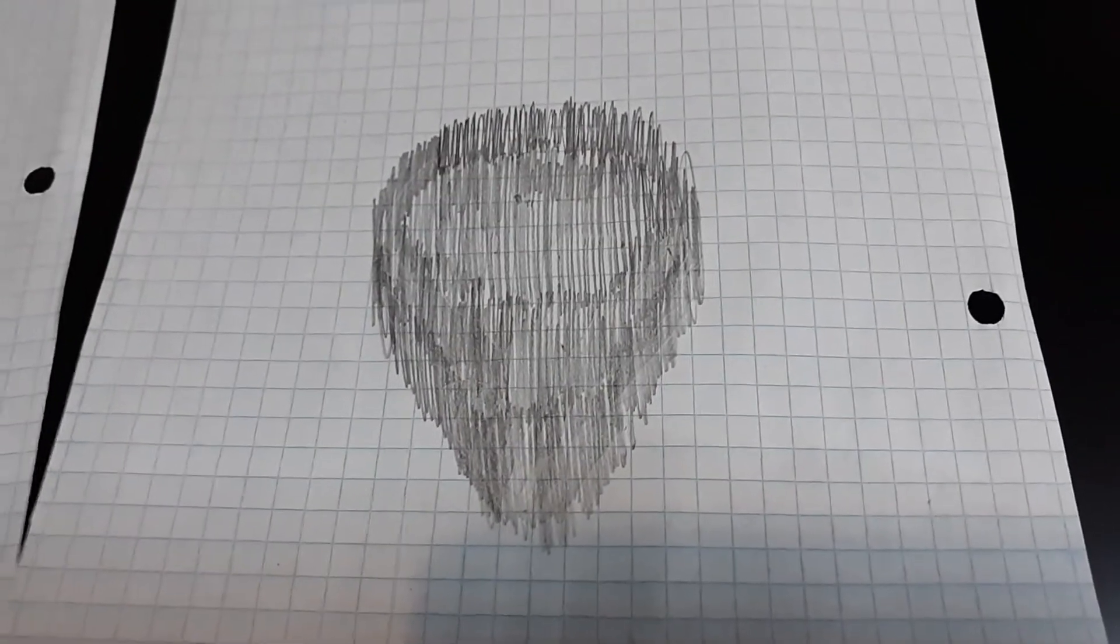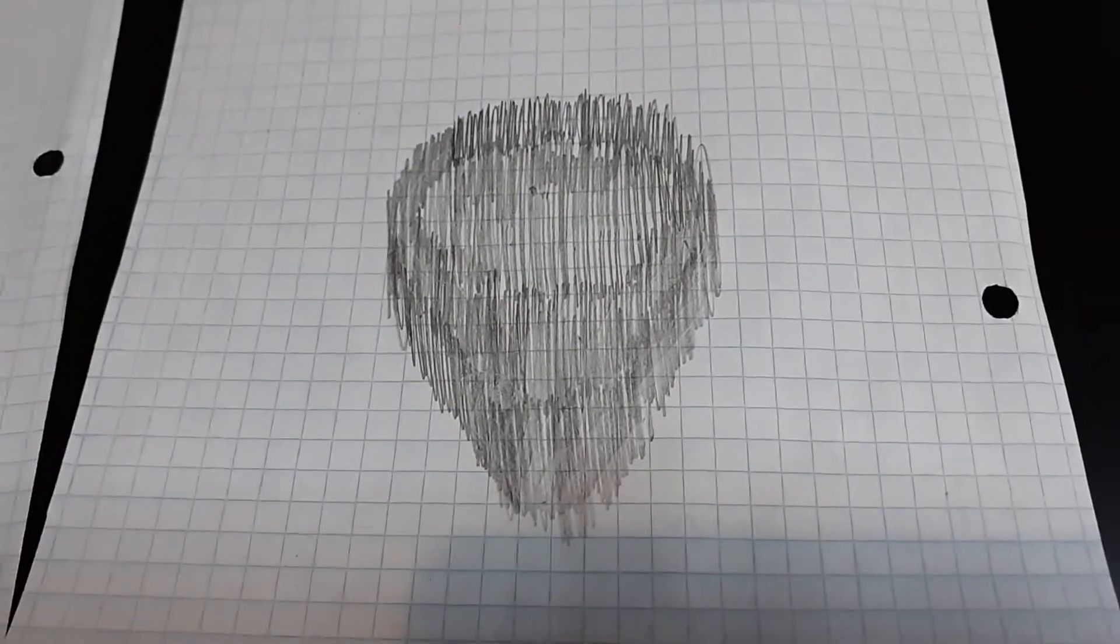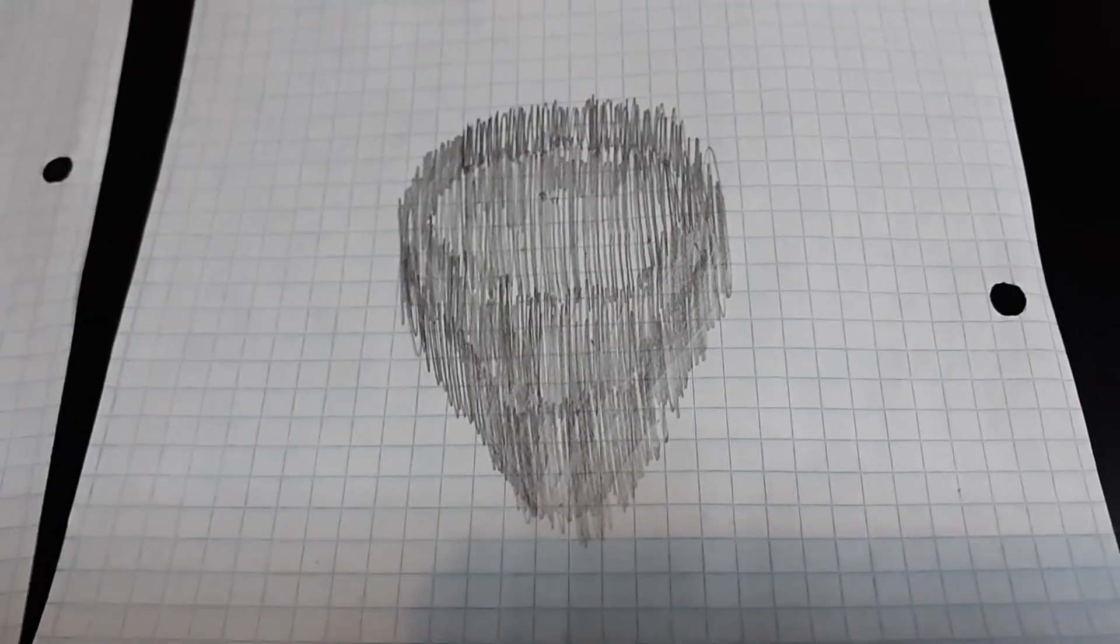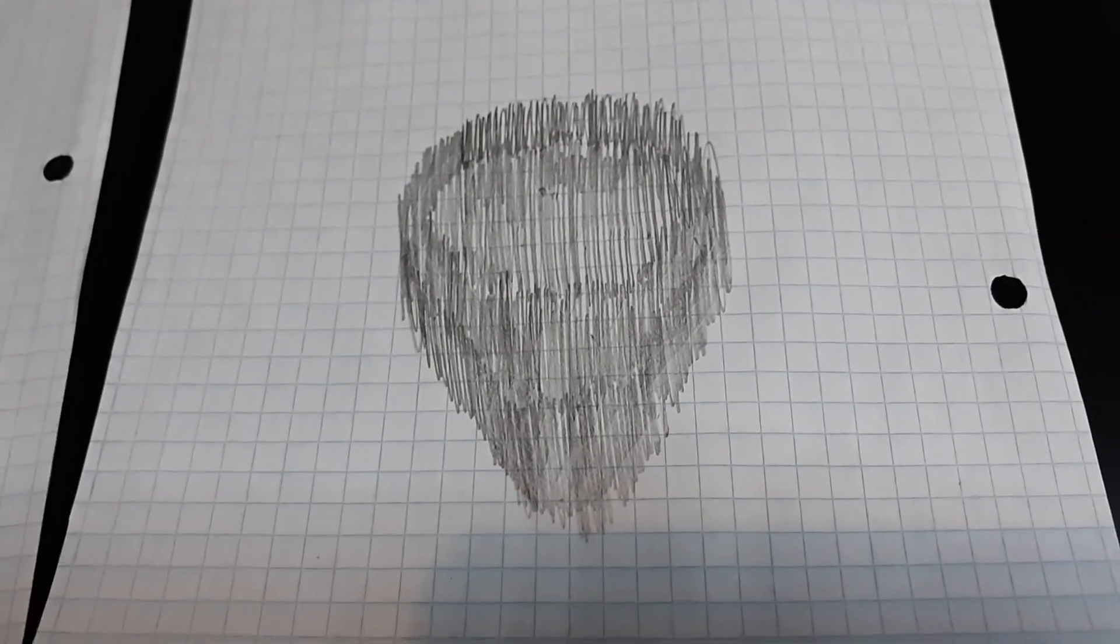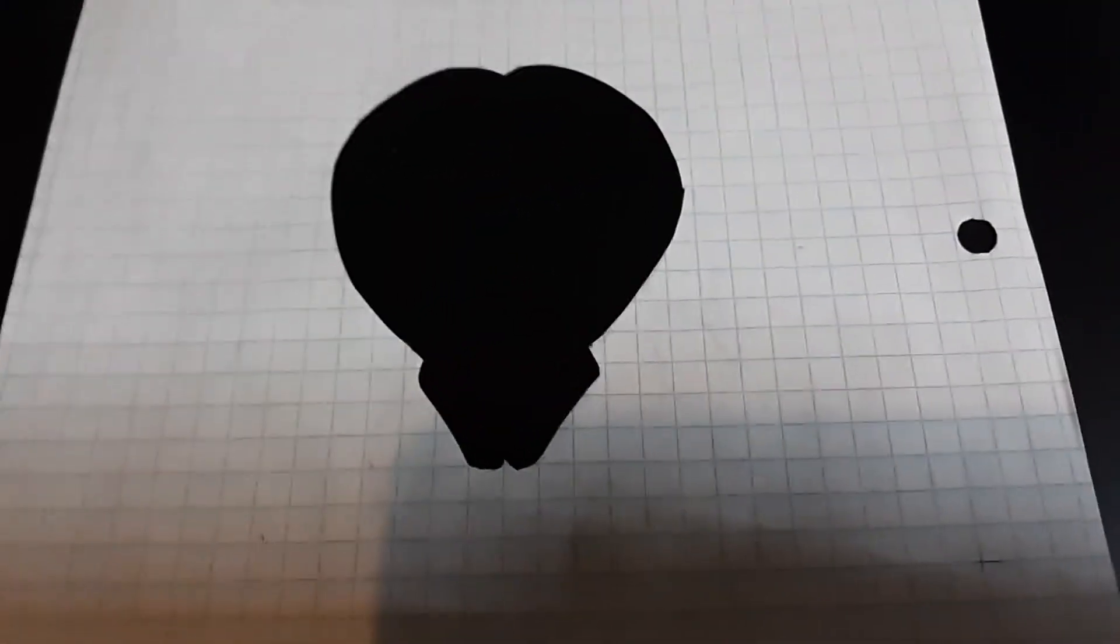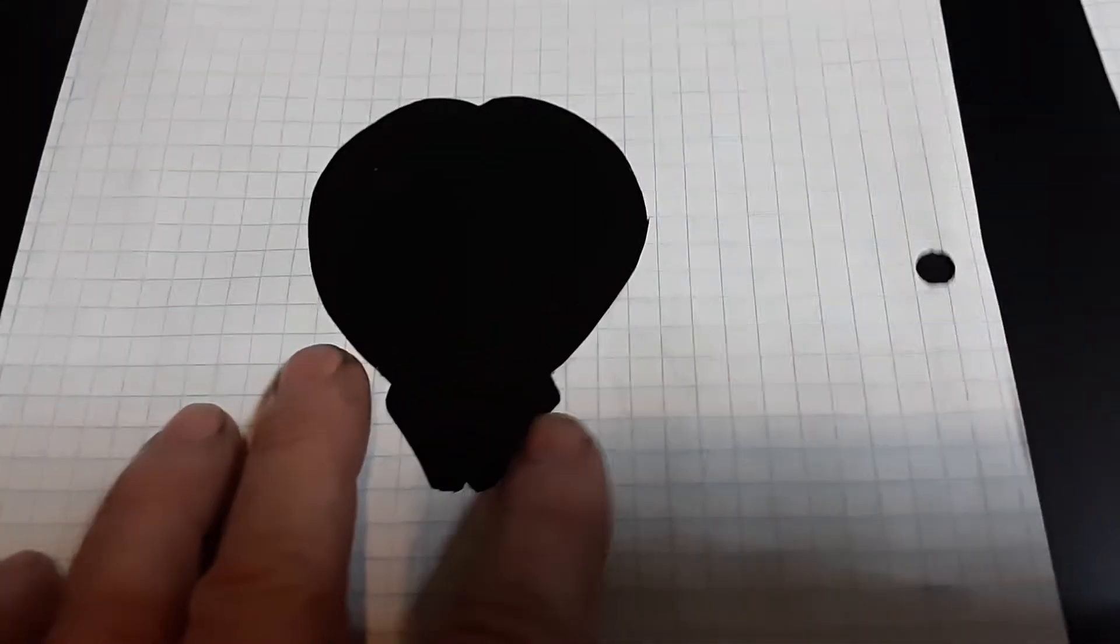And then I made what you would call a carbon copy, pretty much non-existent nowadays. So you just take a number two pencil and you scribble all over it like you see right there. And then you transfer it to your next piece of paper where the part has been cut out.